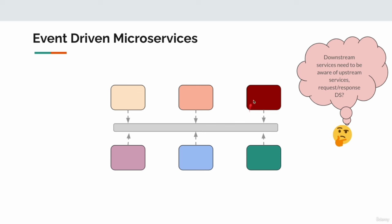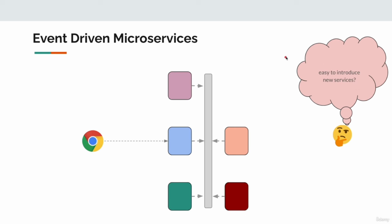We said downstream services need to be aware of all upstream services' locations and request-response data structures. In event-driven architecture, if this is the order service, all it has to do is raise an event when someone places an order — that's it. It does not have to worry about where the inventory service or payment service is, or in which format they are expecting the data.